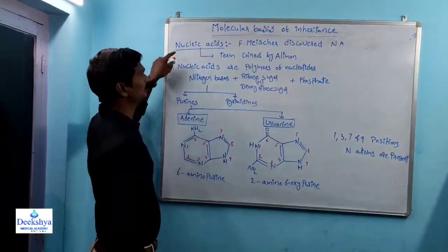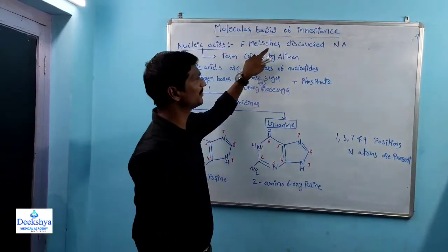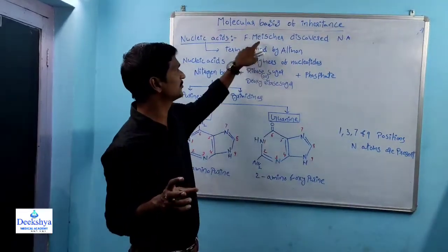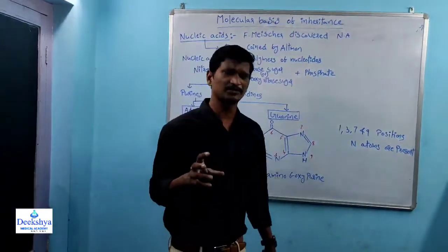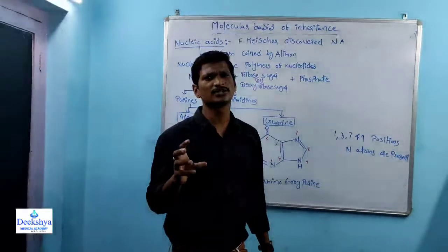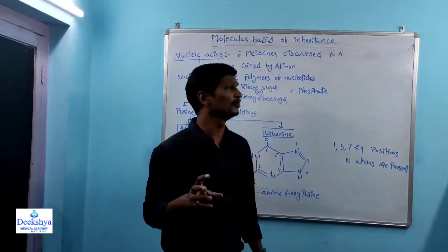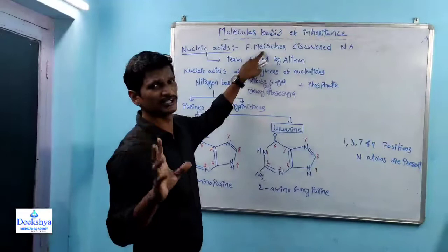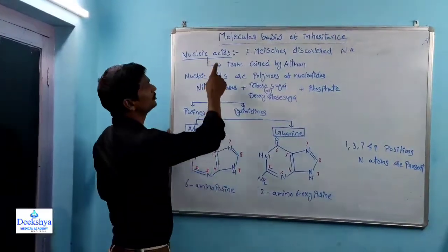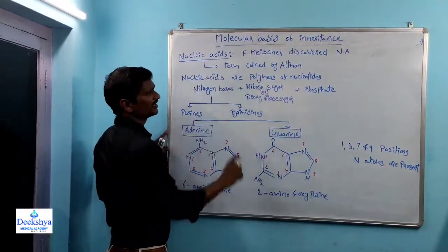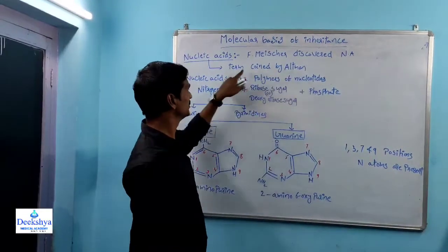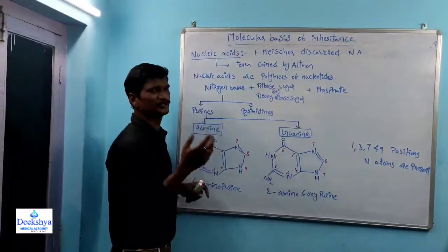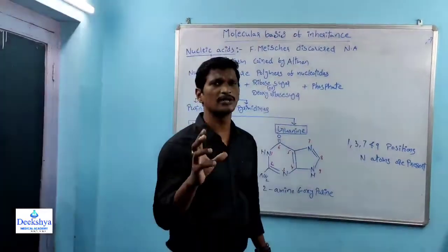The very first topic is Nucleic Acids. Nucleic Acids were first identified by Friedrich Miescher, a scientist — that is the discovery of Nucleic Acids. He identified that acid compounds are present in the nucleus. The initial name was 'Nuclein.' After that, the term 'Nucleic Acids' was first coined by Altman. Nucleic Acids are polymers of nucleotides.